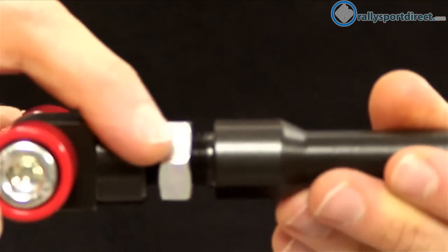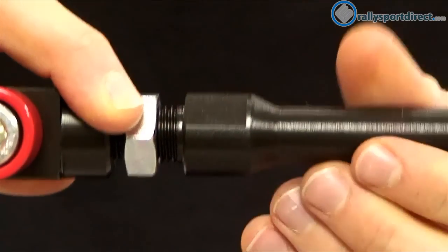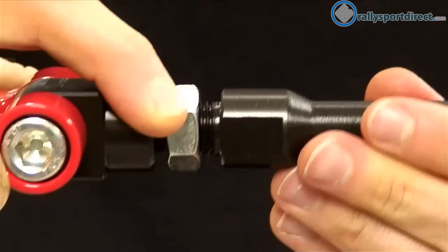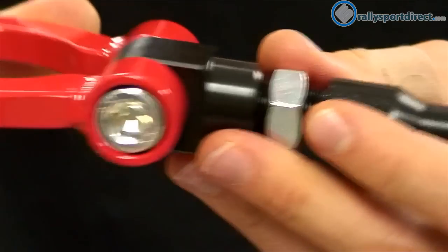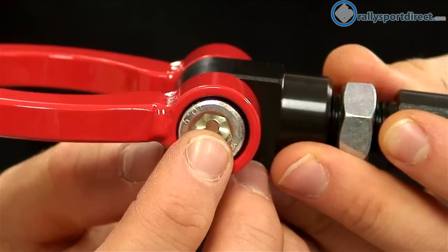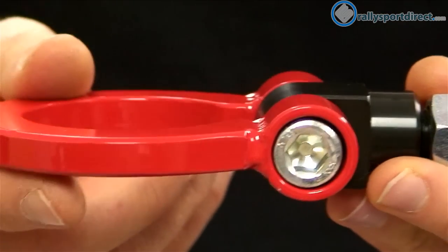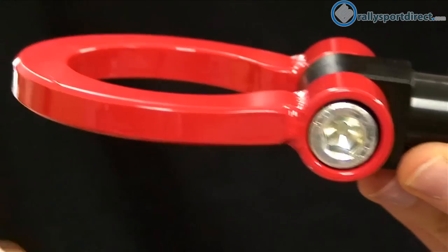So we've got the adjustable portion of this, and I was showing you that earlier. This rod actually spins and you can screw that in or out depending on how far you want this tow hook to sit in or out. And then the second part of adjustability we've got this right here.